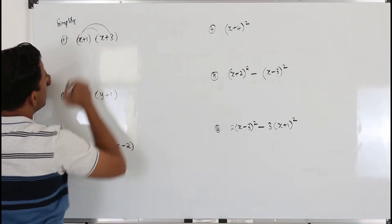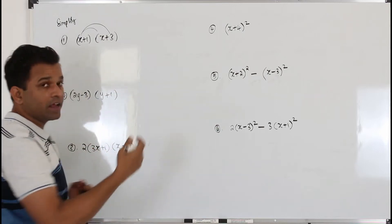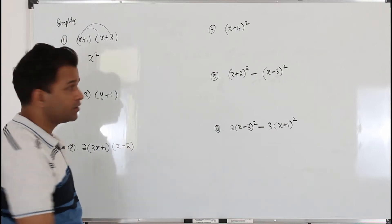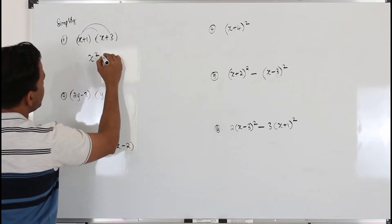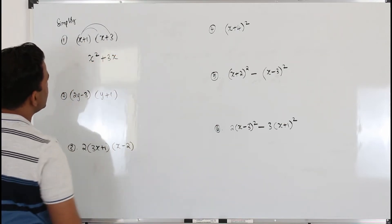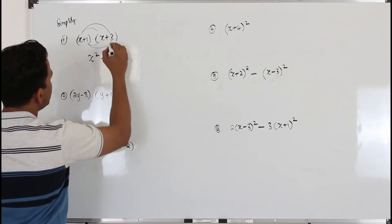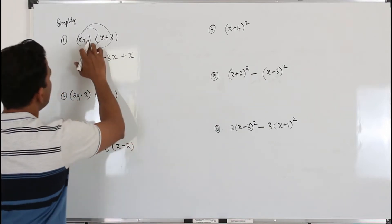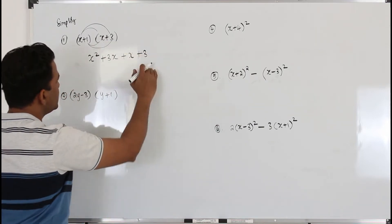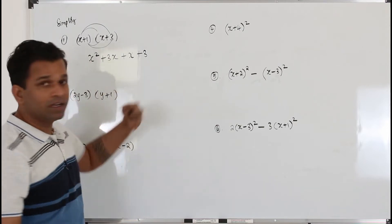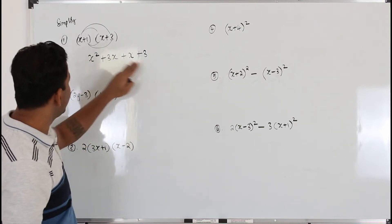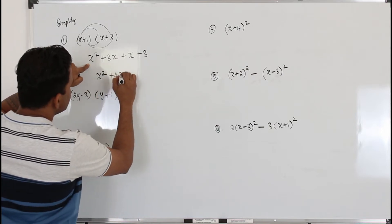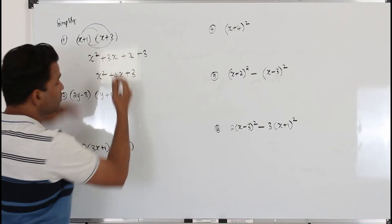Take x and multiply both terms. x times x — do not write it as 2x, it's x square. You are not adding x and x, you are multiplying. And x times 3, write it as 3x. Then take 1 and multiply both: 1 times x is just x, you do not need to write it as 1x. 1 times 3 is 3. Now look for like terms: x square, 3x plus x is 4x, plus 3. That's how you simplify.